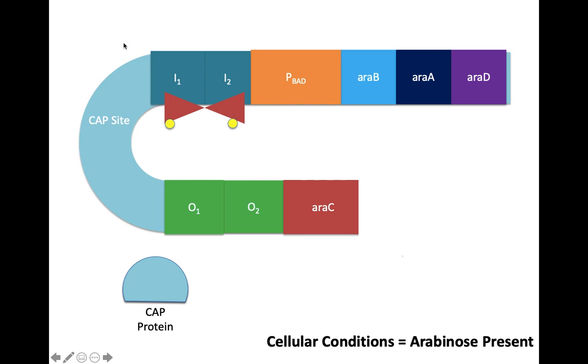In the absence of glucose, CAP will bind the CAP site immediately upstream of the core promoter, bend the DNA, and assist in the recruitment of RNA polymerase.